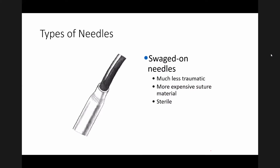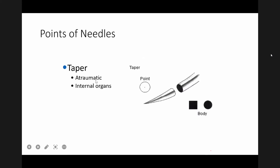The type of needle used nowadays has the thread already fitted into the end of the needle — this is called a swaged needle. They are much less traumatic but are expensive and sterilized. The points of the needle can be of different types: tapered or atraumatic ones are used for internal organs.